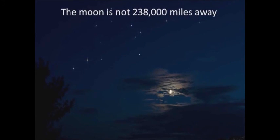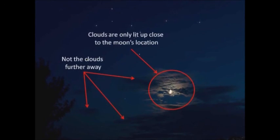So apparently the moon is 238,000 miles away. But if you just put that aside for a second and just look at the moon, perhaps you'll notice this: in this example, only the clouds close to the moon are lit up, not the clouds further away. That indicates that the moon is much, much closer than we've been told, because if the moon were 238,000 miles away, then all the clouds should be illuminated, not just the ones closest to it.